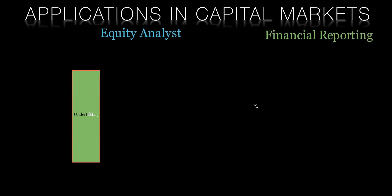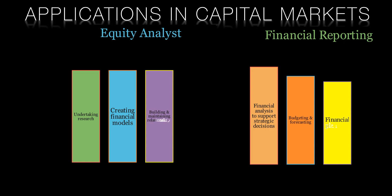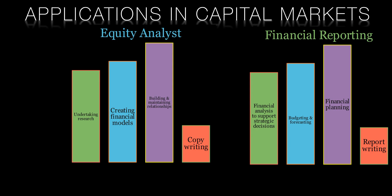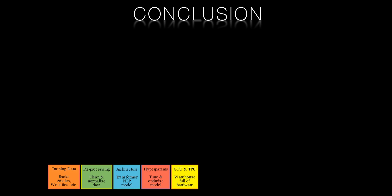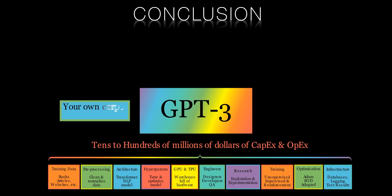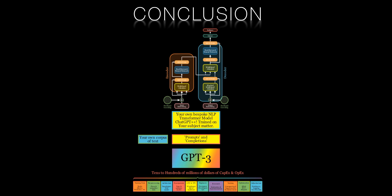Fine-tuned AI models can be used to automate the process of financial reporting, reducing the time and resources required to produce reports and improving the accuracy and speed of the reporting process. In conclusion, foundation models and fine-tuning are powerful tools that are revolutionizing the AI industry. By providing a starting point for new AI applications and allowing for greater customization and improved performance, these concepts are playing a key role in the development of advanced AI applications in finance and capital markets.